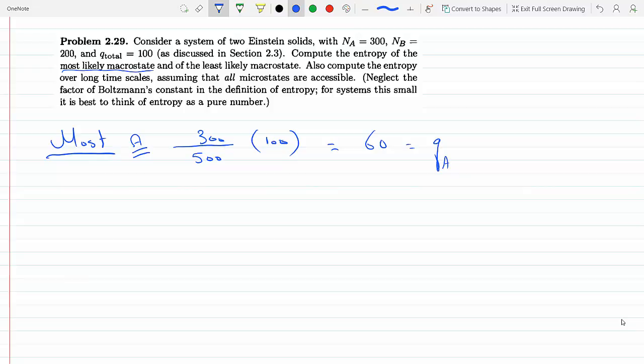And we know that the multiplicity of this macrostate is given by the product of the two individual macrostates. So if QA is 60, clearly QB is 40 because there's a total of hundred. And so the multiplicity will be that of A times that of B. The reason I'm getting the multiplicity is because the entropy is nothing but K ln of the multiplicity. So the entropy S is K ln the multiplicity total for both.